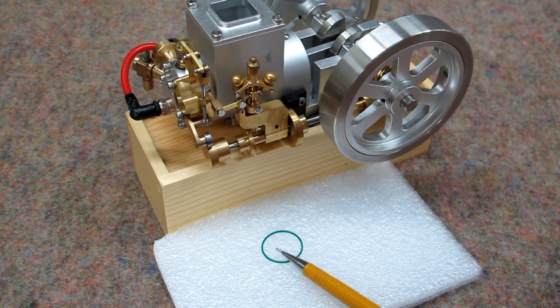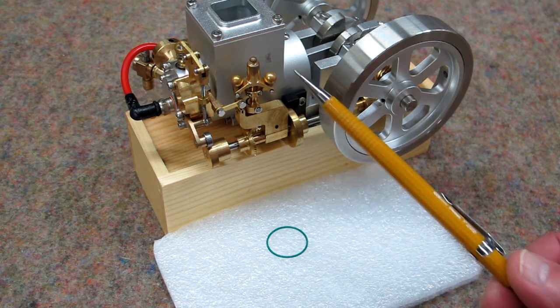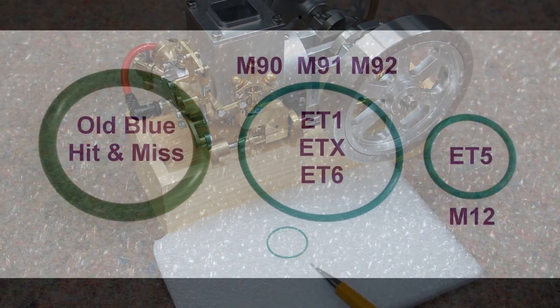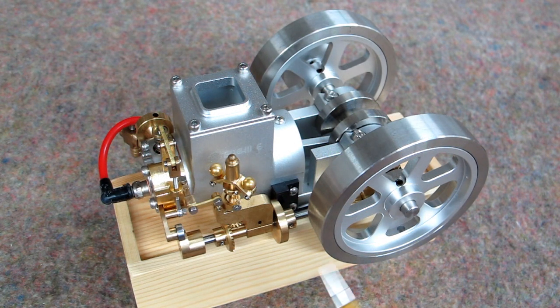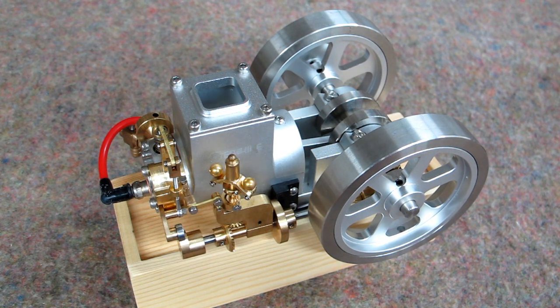This is the small O-ring that's used as a piston ring in this engine. It also fits the ET1 and ETX vertical hit and miss engine. If you want to know how a hit and miss engine works I cover that in my first video on the horizontal hit and miss.